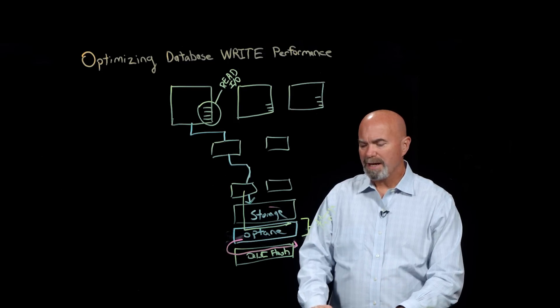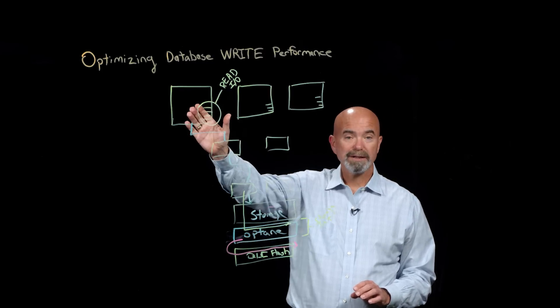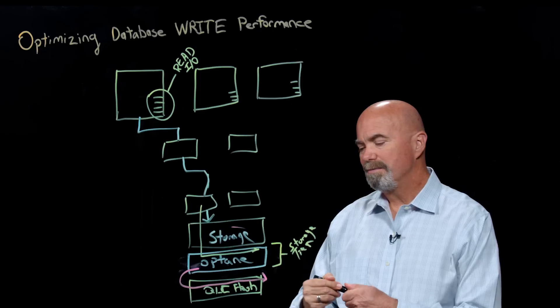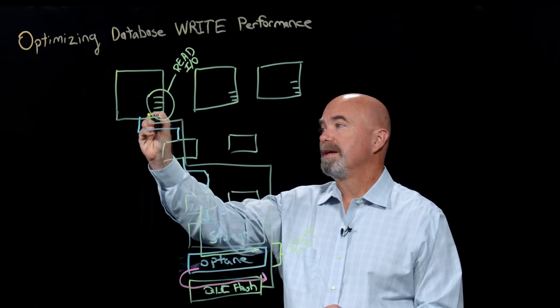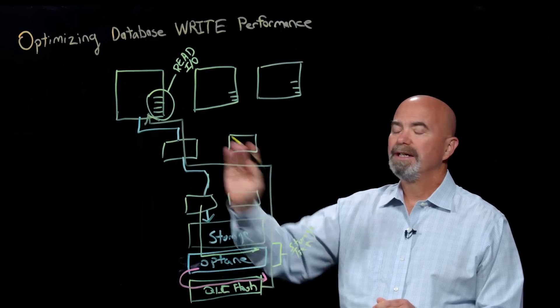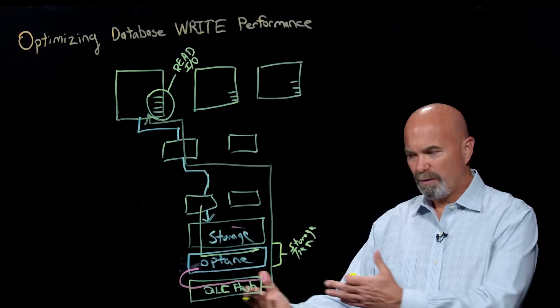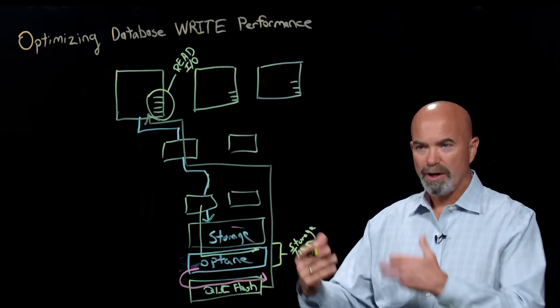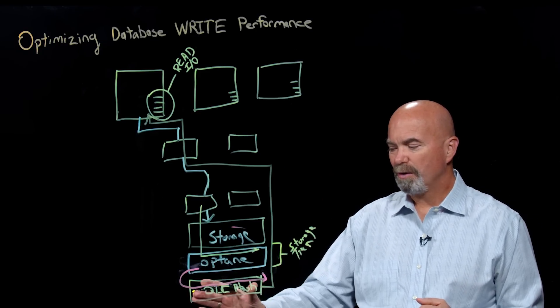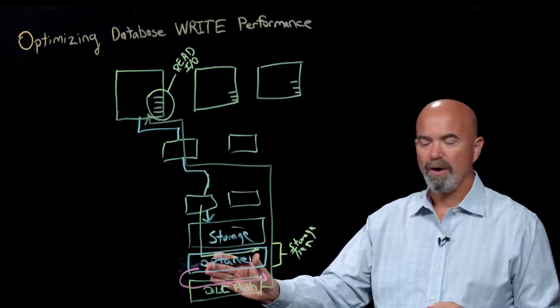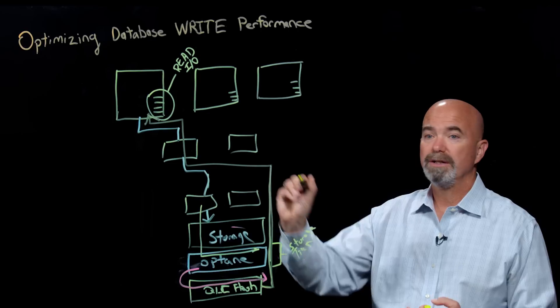Now, the other good thing about this type of design is that when a read does need to come from this tier, because not everything is going to be in that cache, the read can come directly from this QLC tier back up to the storage system. And the performance out of this tier is as fast as the performance out of the Optane tier for a number of reasons. First of all, QLC read performance is very good. Our software happens to drive that very quickly. And there's generally more QLC Flash drives than there are Optane drives. And so that combination leads to very good performance coming out of this tier right here.